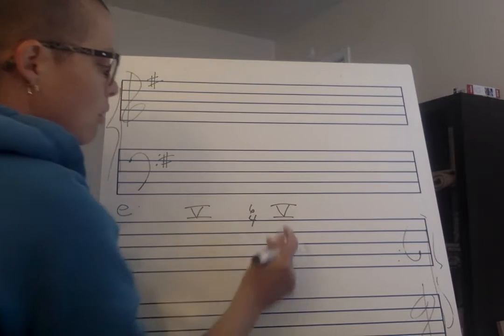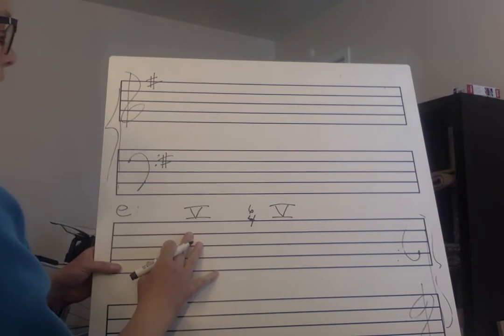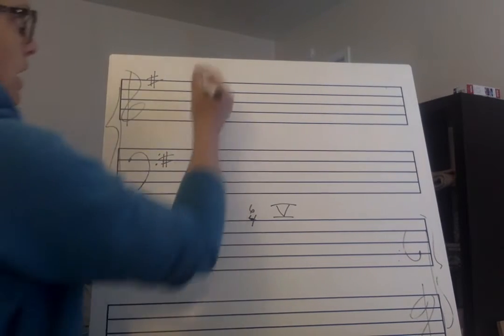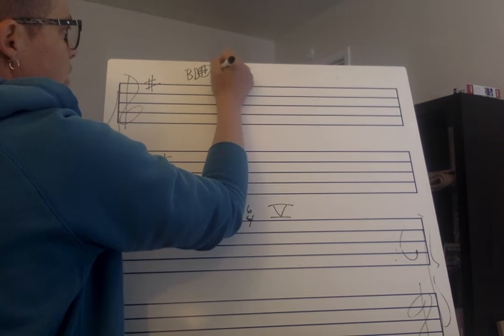And we can figure out what roman numeral that's going to be when we do that. So our 5 chord in this key is B, D sharp, which will need the accidental, and F sharp.